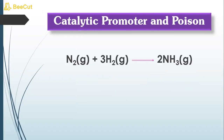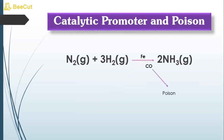Consider the preparation of ammonia by the Haber process. In this reaction, Fe (iron) is the catalyst. If molybdenum (Mo) is used, it acts as a catalytic promoter, increasing the activity of iron. However, if CVO is used, it decreases the rate of formation of ammonia — meaning CVO acts as a catalytic poison.